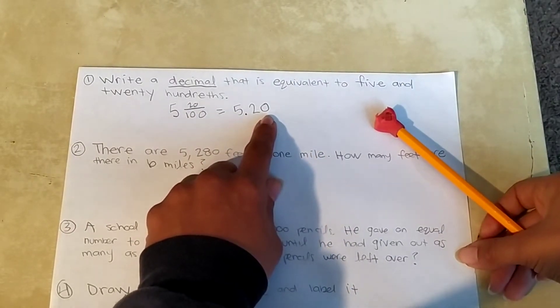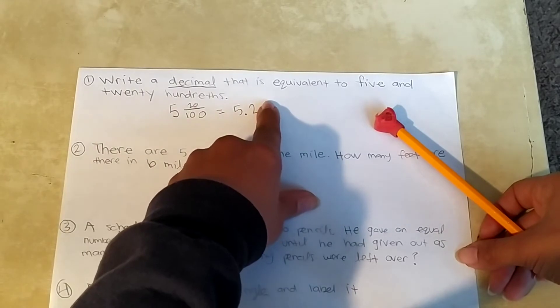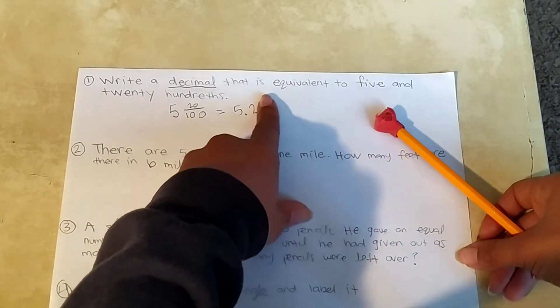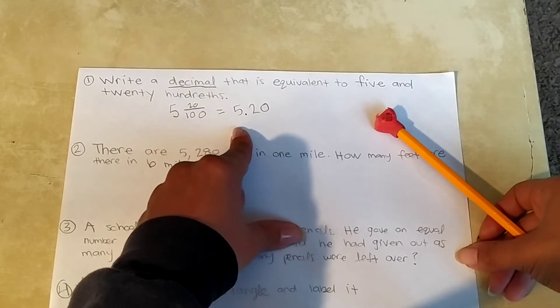We know that 20 hundredths is the same as 2 tenths. So this fraction, this decimal is the same if I cover up the zero or not. Okay, there it is.